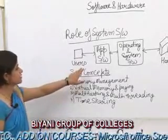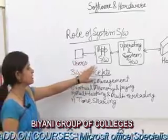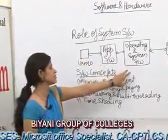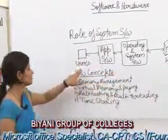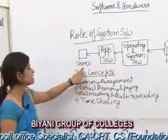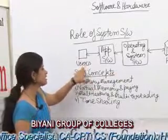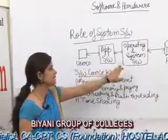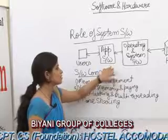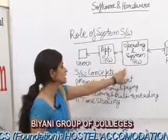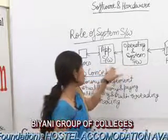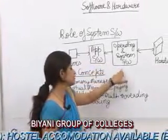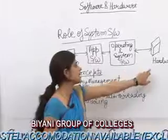This figure defines application software and system software. First of all, the user works in application software and system software, and application software and system software are also connected with hardware.